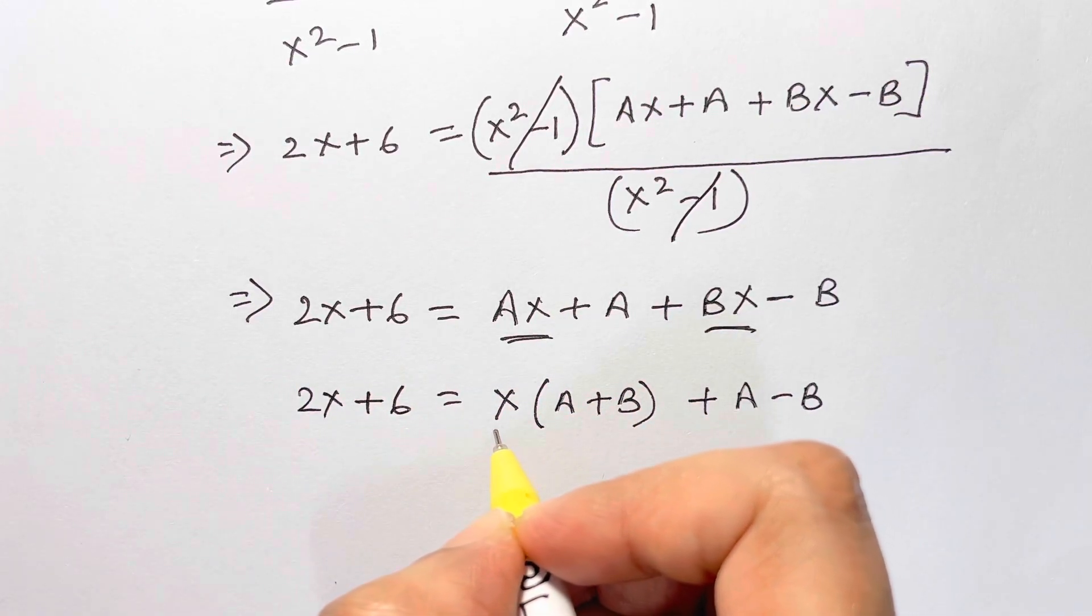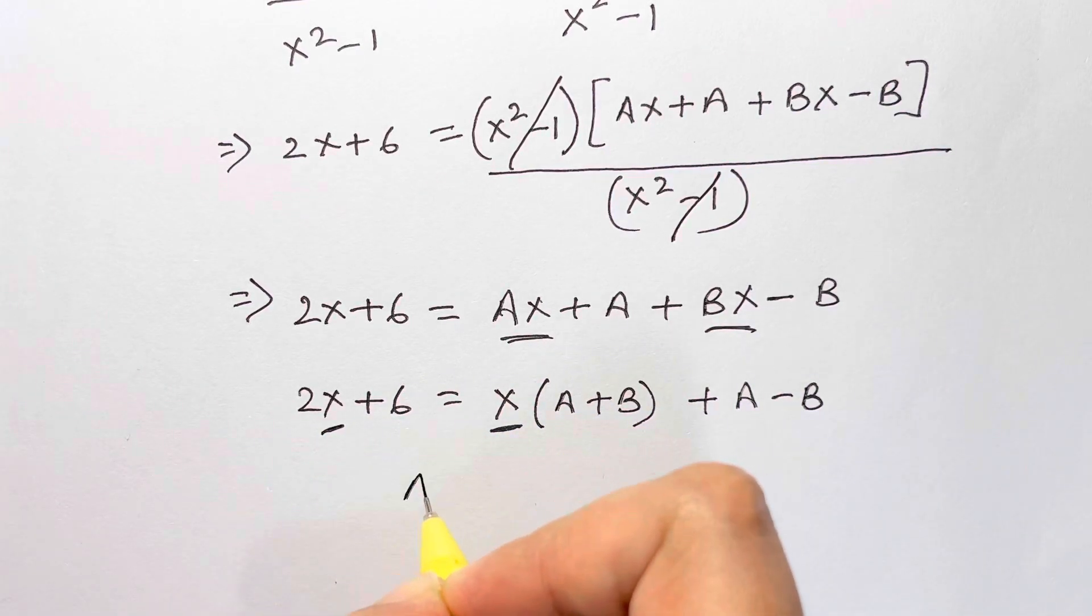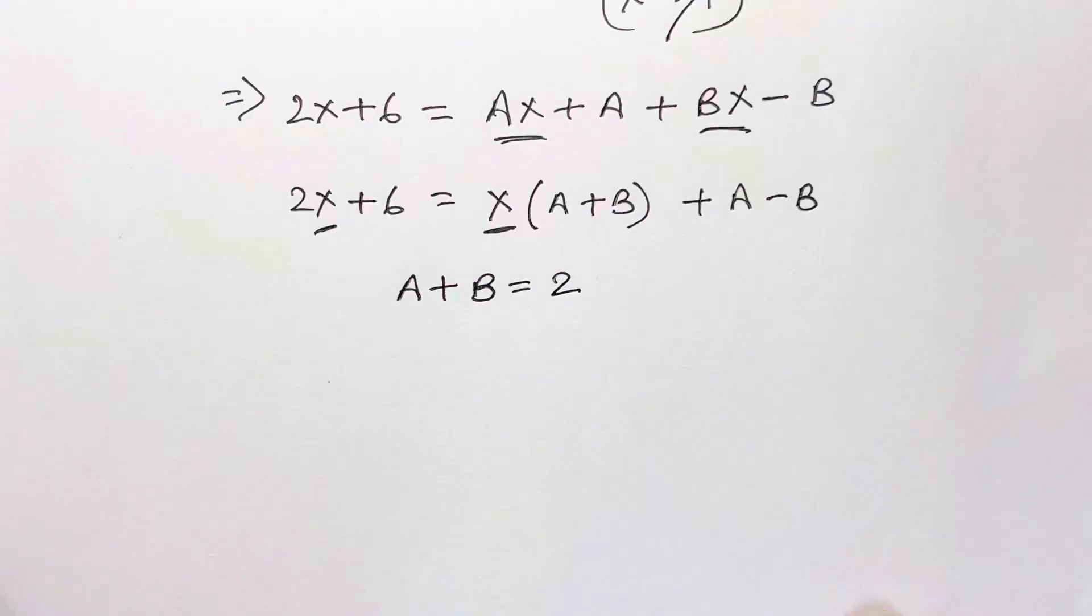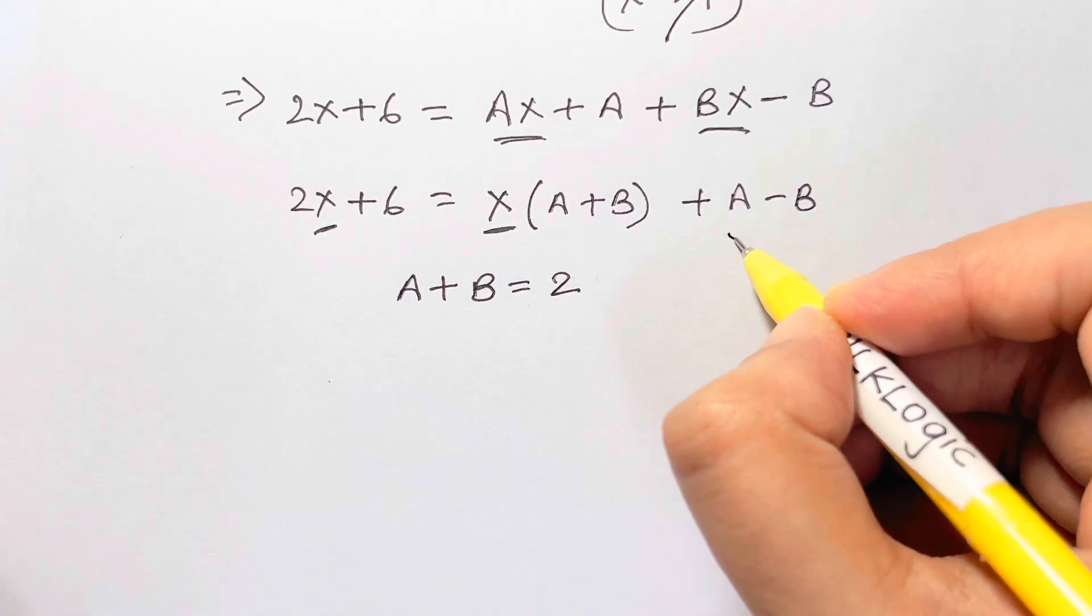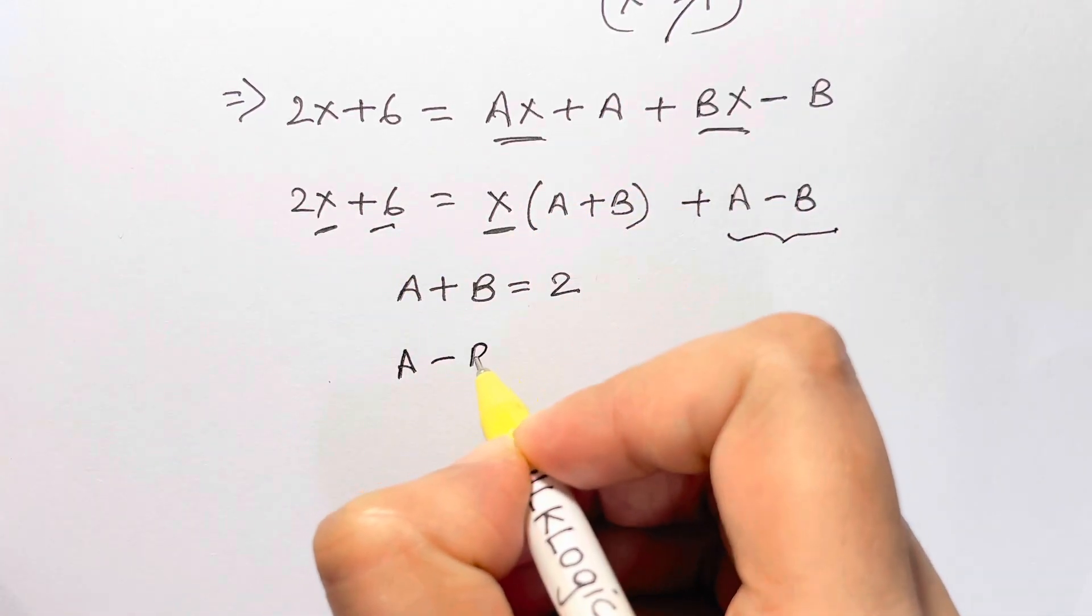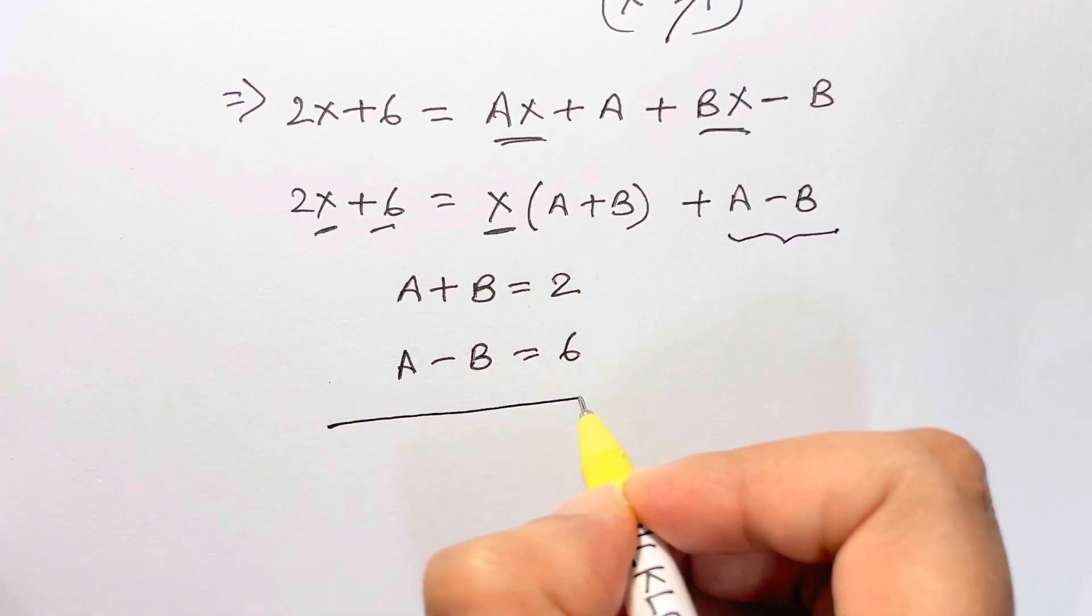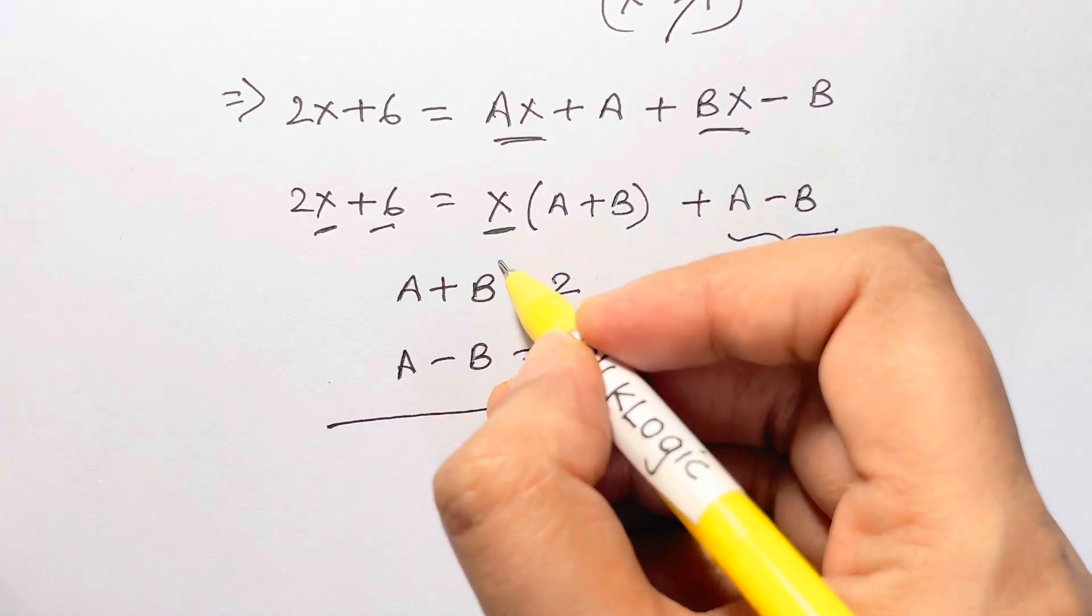Now I'm going to compare the coefficients of x. Here I have x term, here I have x term, so I have A plus B is equal to 2. Next I'm going to compare the constants A minus B and 6. I have A minus B is equal to 6.